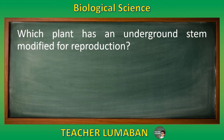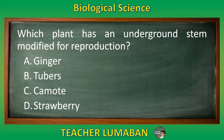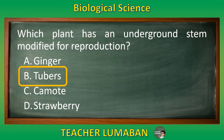Which plant has an underground stem modified for reproduction? Letter A: ginger. Letter B: tubers. Letter C: camote. Letter D: strawberry. The correct answer is letter B, tubers. The plant that has an underground stem modified for reproduction is tubers.